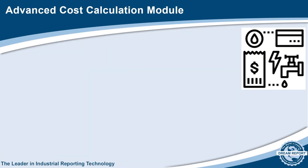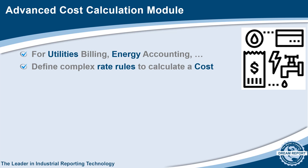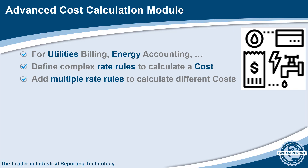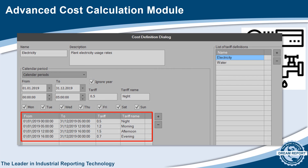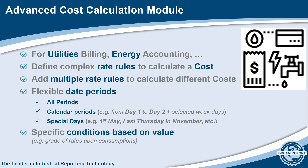The Cost Calculation module is a new feature that enhances DreamReport's capabilities for utilities billing, or anywhere you want to associate a rate or tariff to a raw data metric such as a meter or a counter. In this module, you define rate schedules for different utilities — water or electricity, for example. Rates for different times of the day or different times of the year can be defined, as well as rates for special dates such as the 1st of May or Thanksgiving Day, which in the US is the last Thursday of every November. This is a very powerful and flexible interface. Additionally, special conditions based on meter values can be assigned.